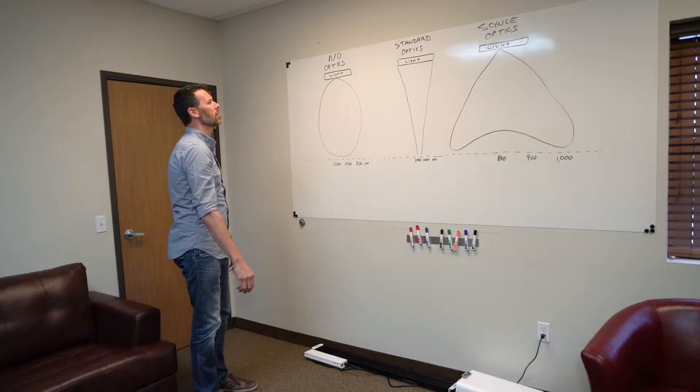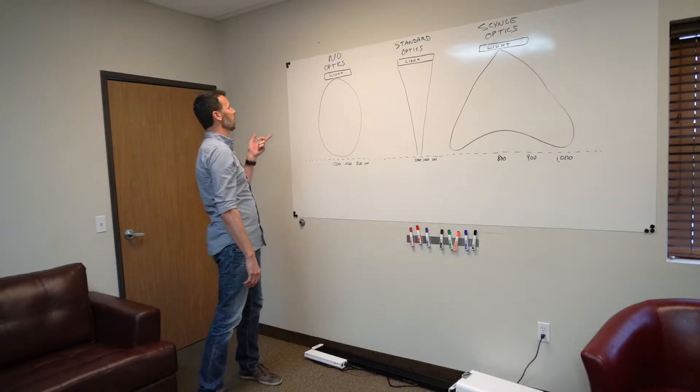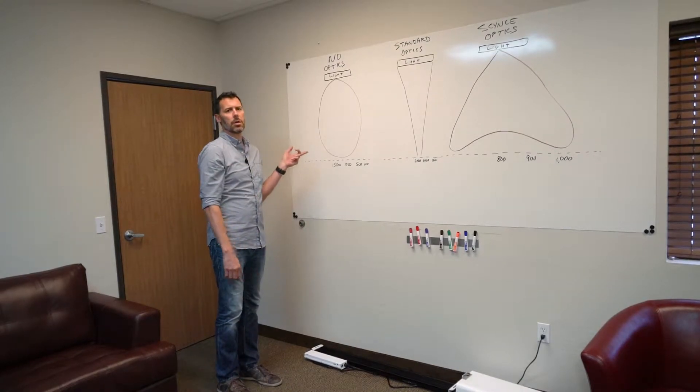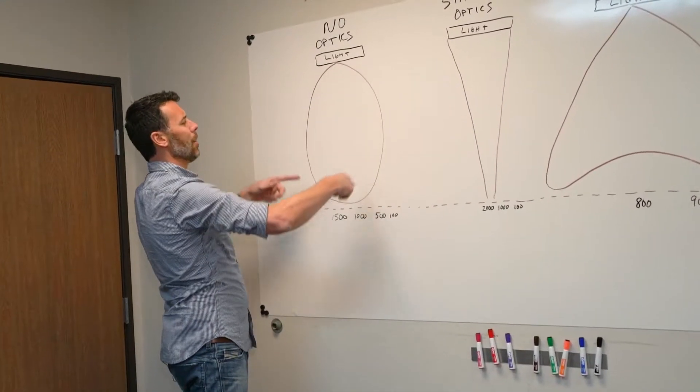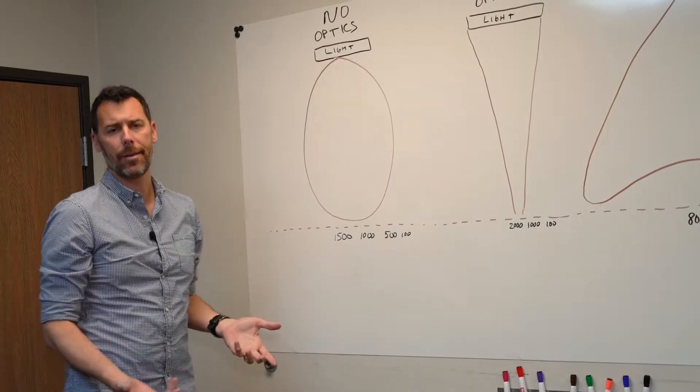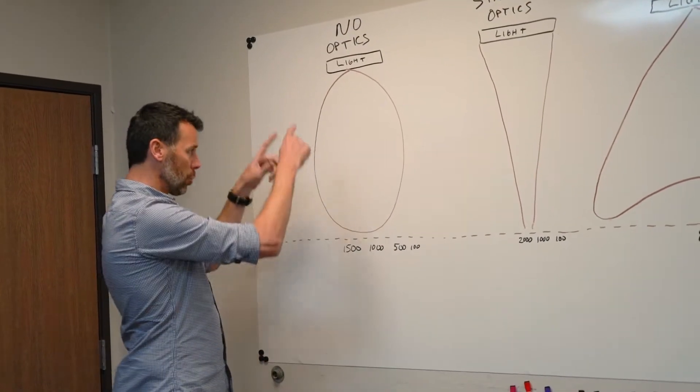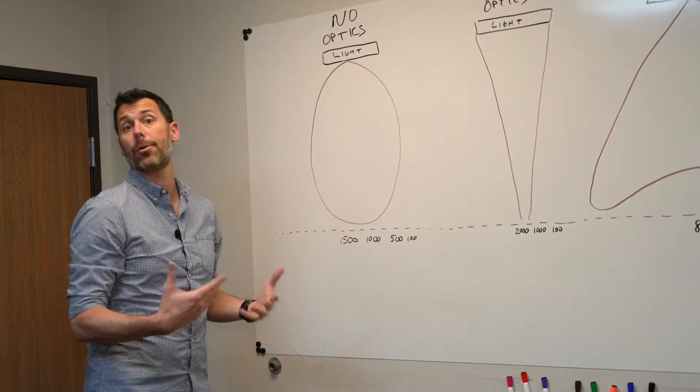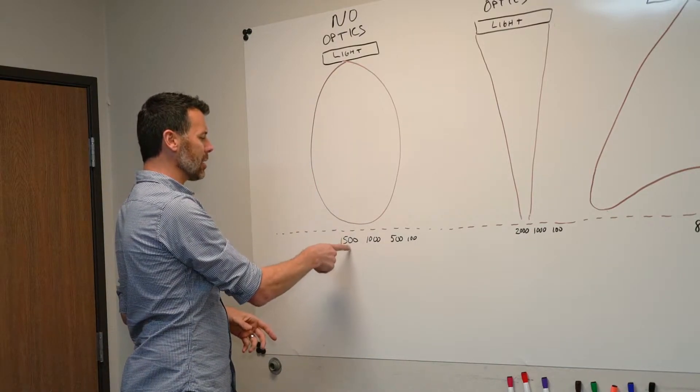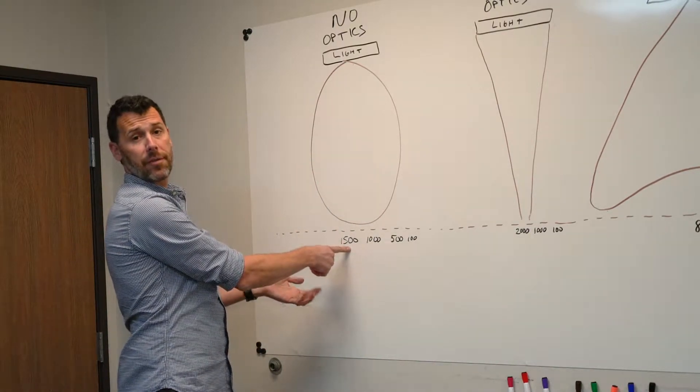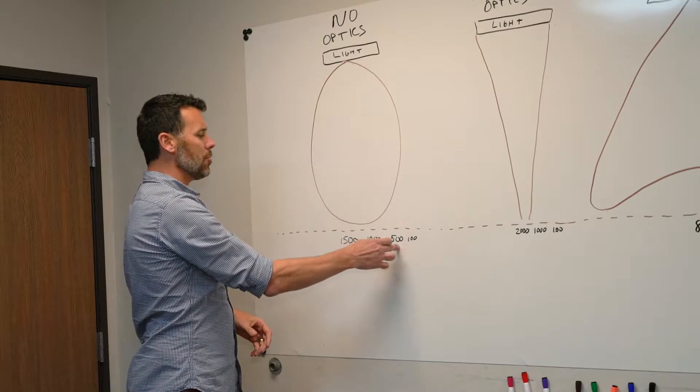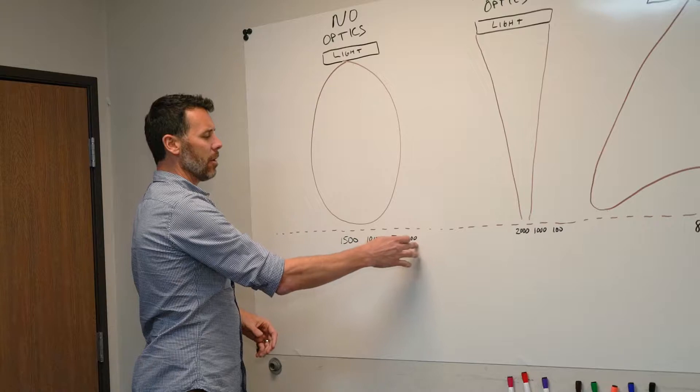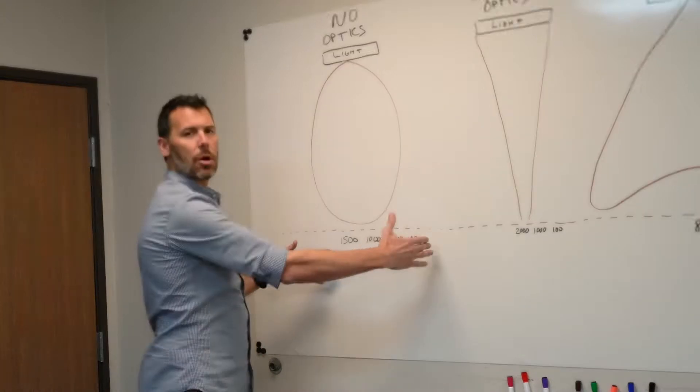So I wanted to start with kind of these three things I drew on the board. This first picture here is what an LED looks like with no optics. This kind of upside down balloon is what's called a Lambertian pattern, and it's really how light comes off of a naked or raw LED. What we get is this high value, let's call it 1500 micromoles, which is your PAR value directly underneath it. As you move away, it kind of slowly fades away, but you get that high value right in the middle.